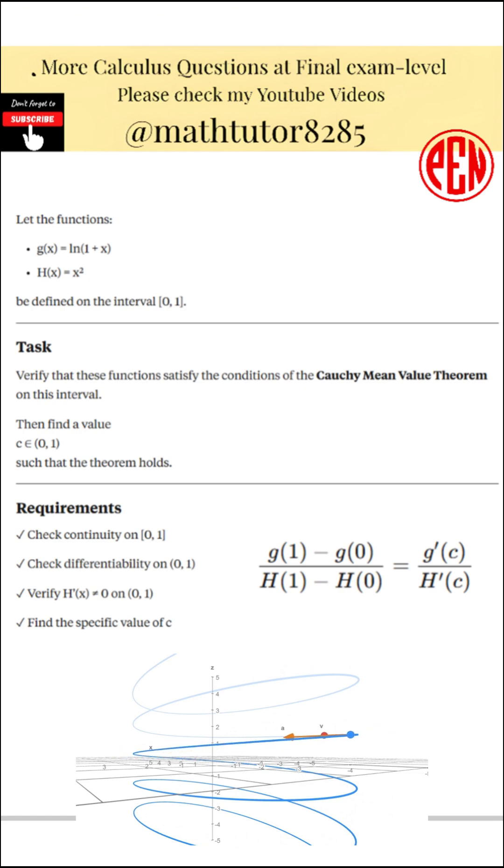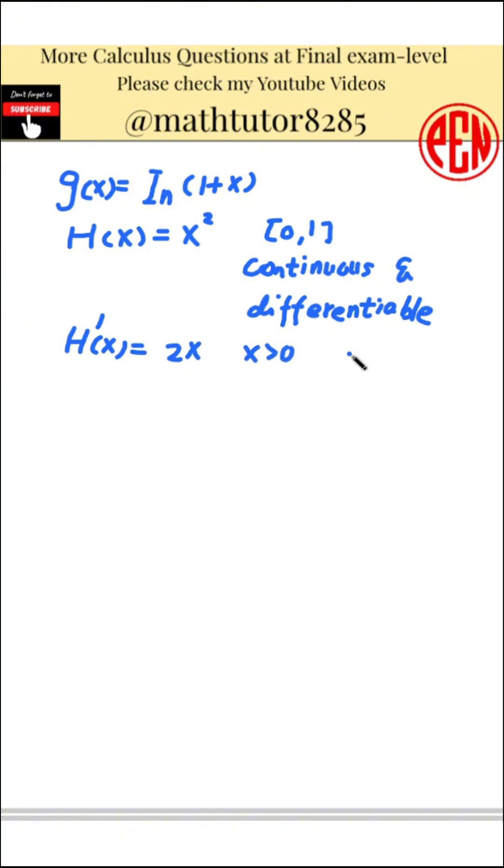Let me check the conditions of the Cauchy-Mean Value Theorem. First, the function g of x, which is the natural logarithm of 1 plus x, is continuous on the closed interval from 0 to 1 and differentiable on the open interval between 0 and 1. Second, the function h of x, which is x squared, is also continuous on the closed interval from 0 to 1 and differentiable on the open interval. Its derivative, h prime of x, is equal to 2 times x, which is never 0 within the open interval from 0 to 1. So all the conditions of the theorem are satisfied.